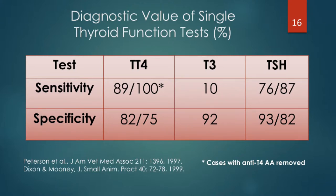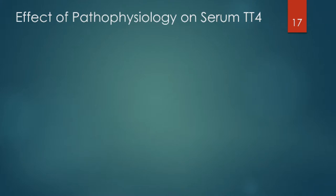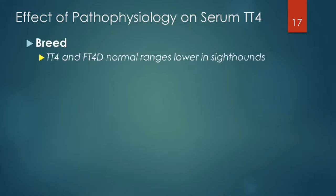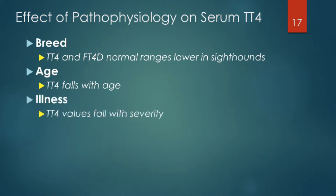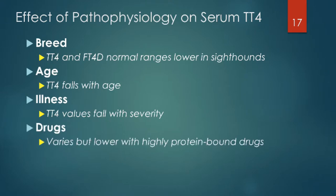We tend to rely on the measurement of total T4, and maybe occasionally free T4. Before going further, we need to understand that many things can alter total T4 values, usually to the downside. Certain breeds like sighthounds will have lower free T4 and total T4. Age causes total T4 to fall. Illness — total T4 falls with the severity of illness, called non-thyroidal illness. Certain drugs, particularly those that impair binding of thyroid hormone to serum-binding proteins, will tend to lower thyroid hormone.